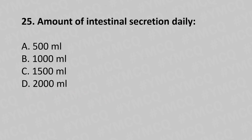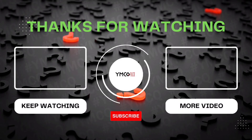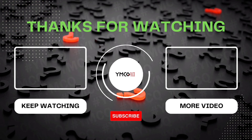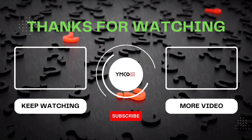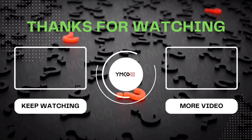Now let's move to question number 25. Amount of intestinal secretion daily: Option A: 500 ml. Option B: 1000 ml. Option C: 1500 ml. Option D: 2000 ml. And the answer is Option B: 1000 ml. Thank you for watching this video. If you have any doubts, please mention below. We will be back with part 2 of this series soon, so do subscribe to this channel. Bye.